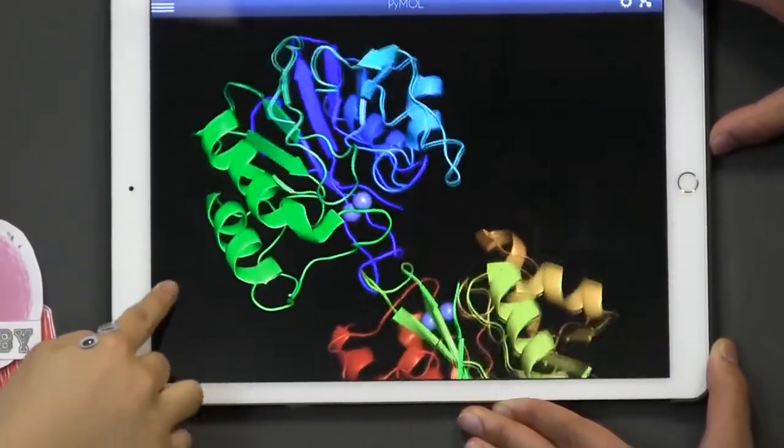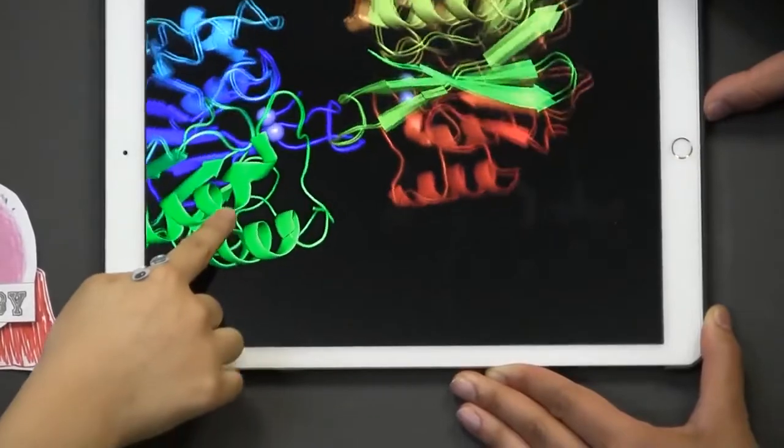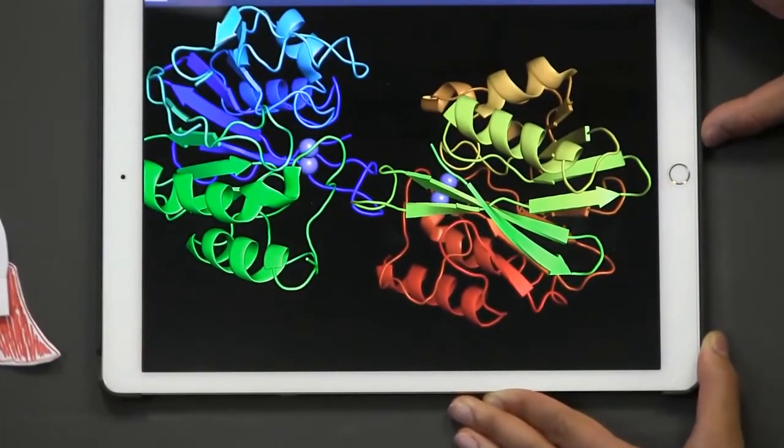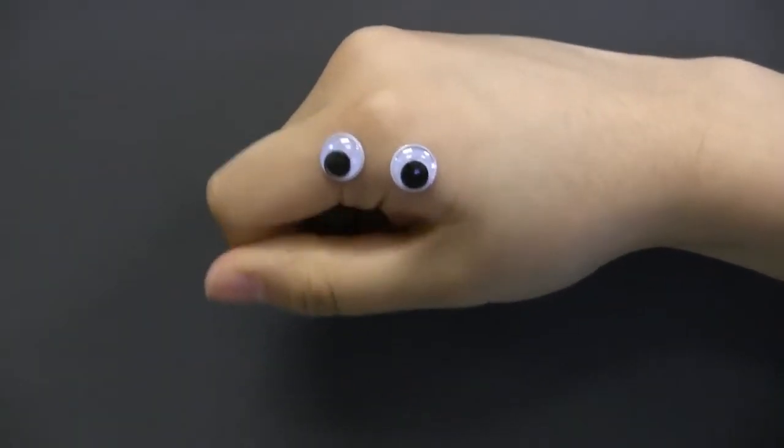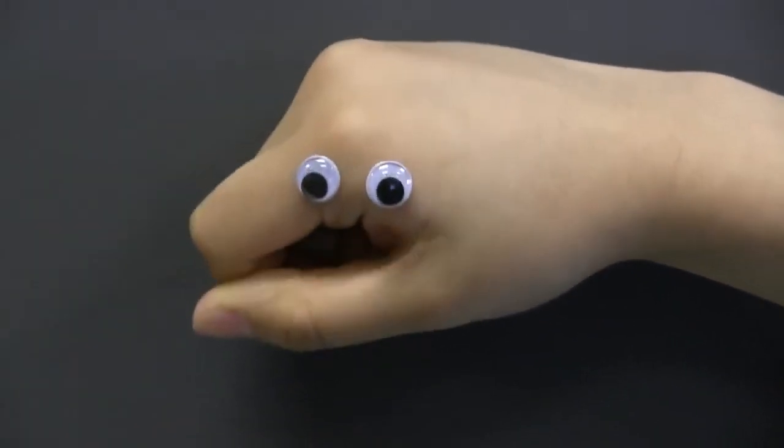Superbugs resist the strongest beta-lactam antibiotics, carbapenems, and they use this enzyme to ruin them. To this day, scientists are still trying to figure out ways to defeat them.